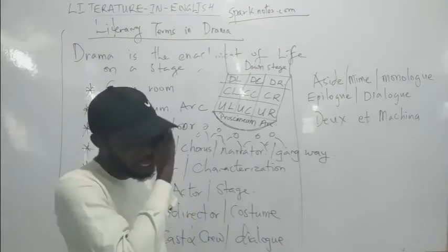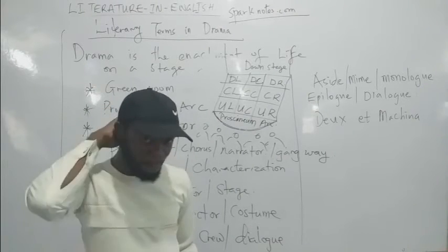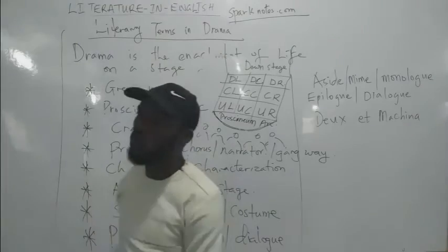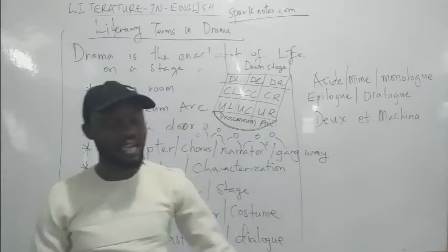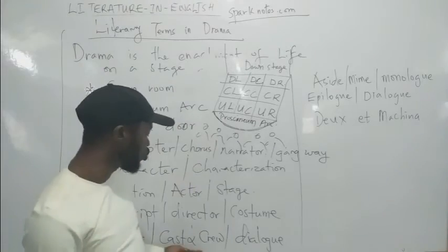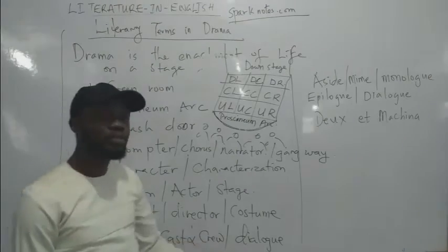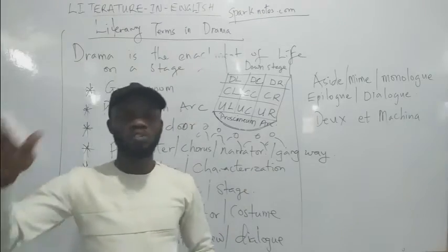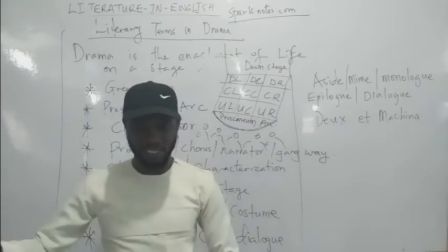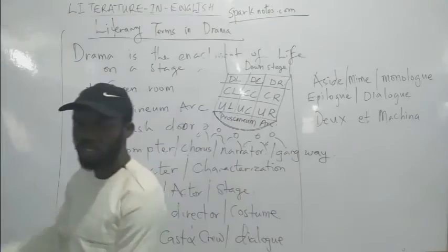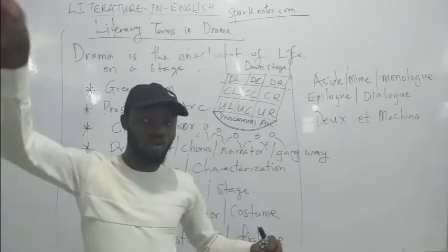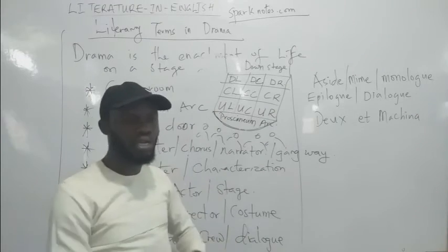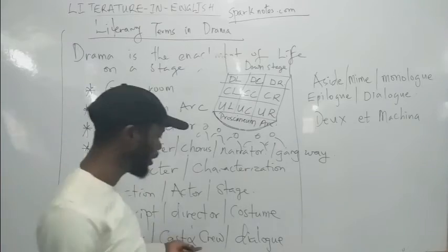Cast refers to a list of everybody playing a role in the story — whether a minor 'waka-paso' role or a major round or flat character. Crew are the people behind the scenes who make the production work: the stage manager who moves furniture between scenes, the sound person who fixes the microphone. Crew work manually behind the scenes to ensure the action reaches the audience.